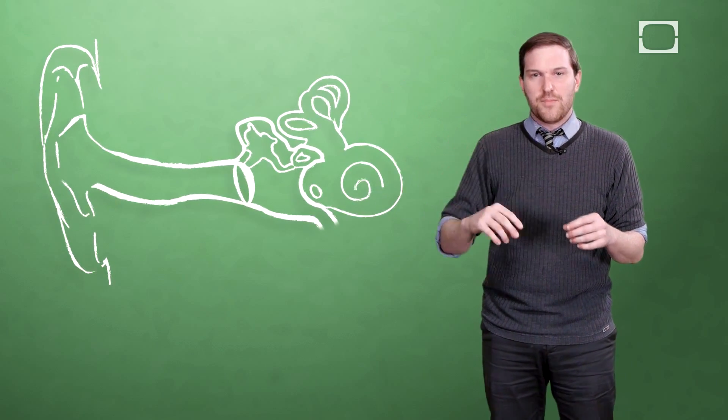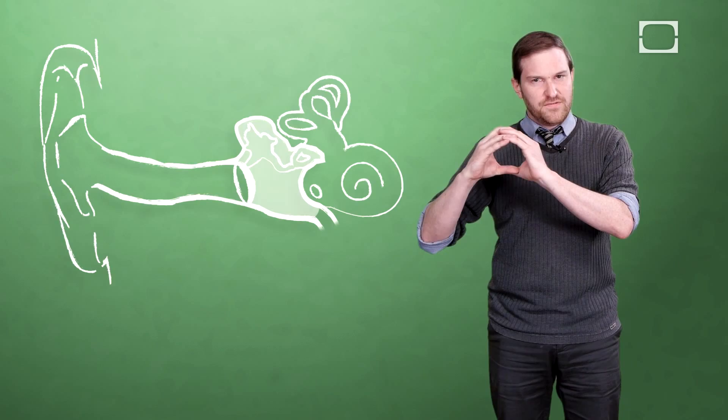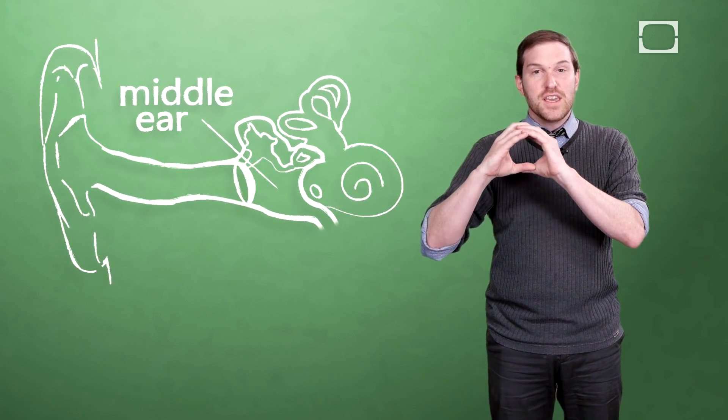On the other side of the ear drum there's this hollow space filled with air. We call this the middle ear.